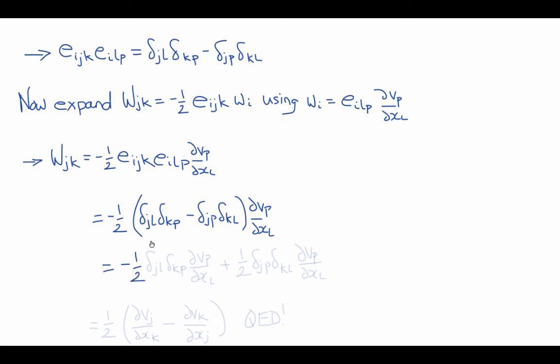Now expanding this out, we'll get minus one-half delta jl delta kp times del vp del xl plus one-half delta jp delta kl times del vp del xl.